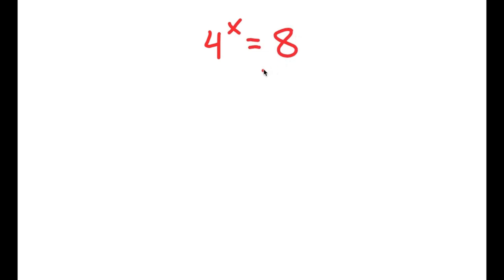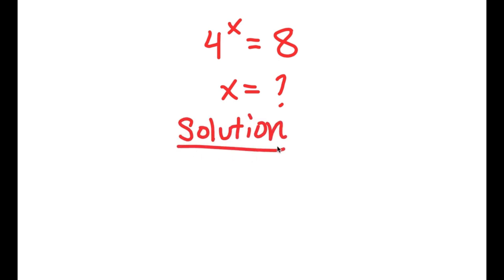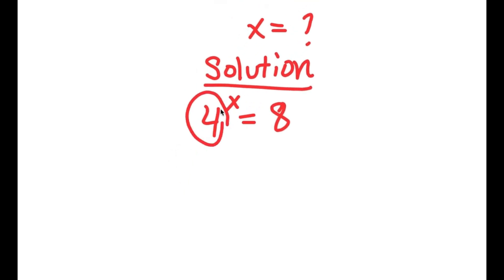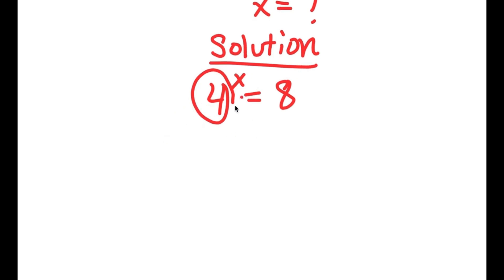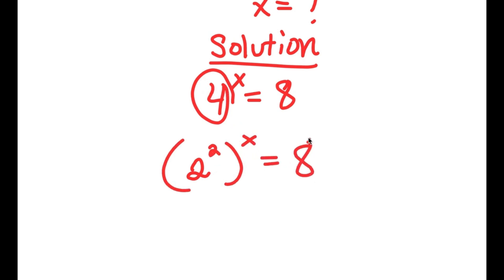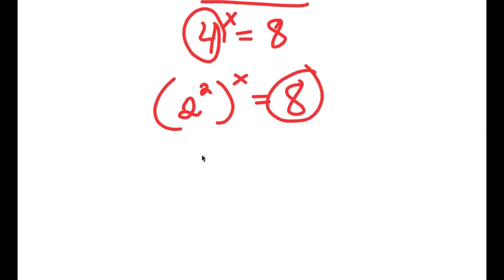In this problem, I have 4 to the power of x is equal to 8. I want to find the value of x. First, I rewrite 4 as 2 squared, so I have 2 squared to the power of x. Then 8 is the same thing as 2 to the power of 3, so I replace 8 with 2 to the power of 3. So I have 2 squared to the power of x is equal to 2 to the power of 3.